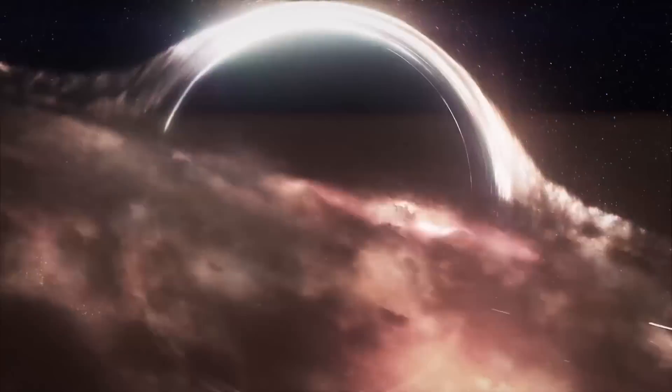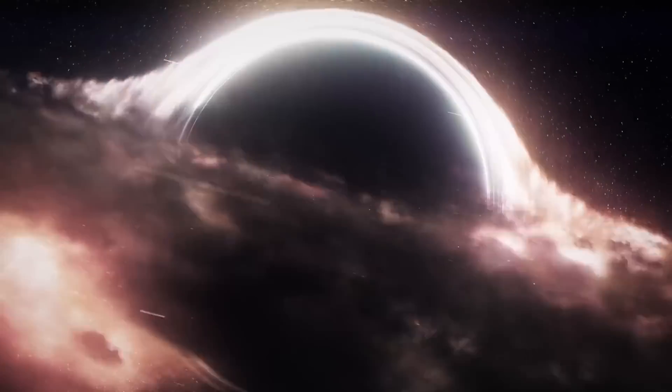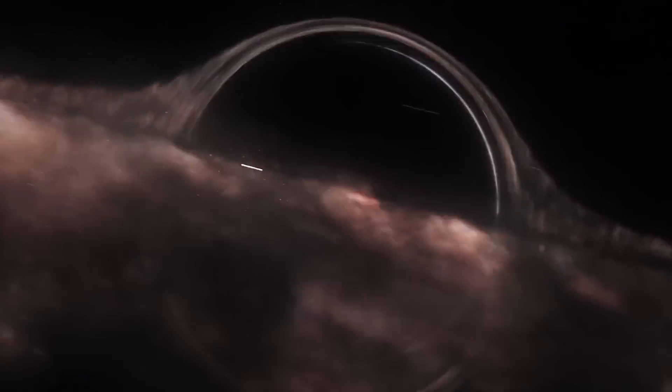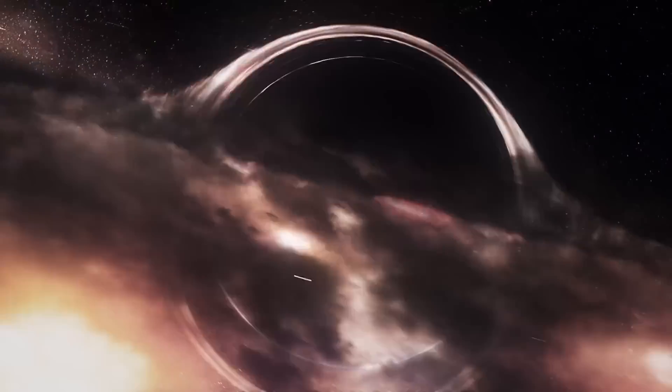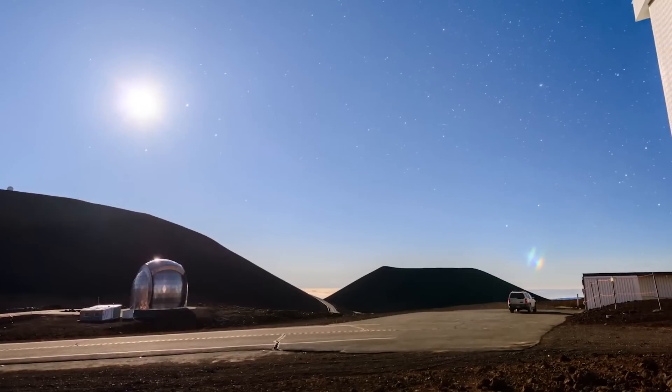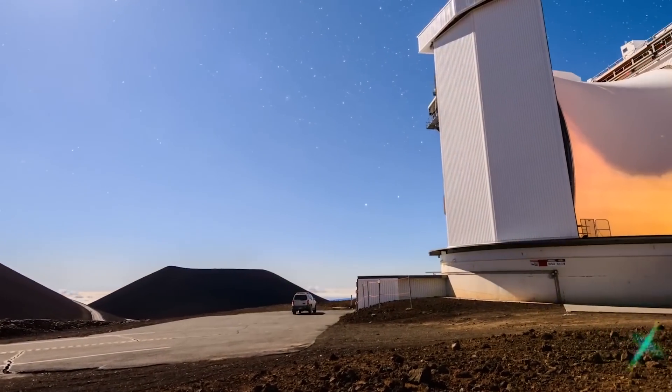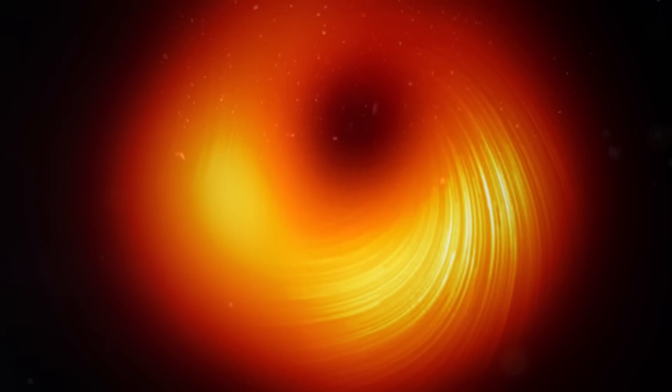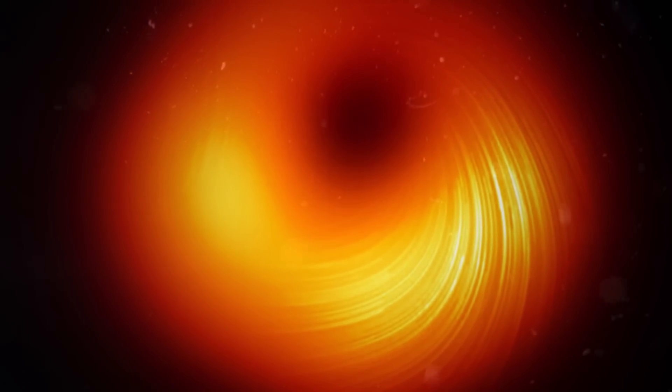Because the black hole is around 27,000 light-years from Earth, it appears in the sky to be about the same size as a doughnut on the Moon. The accomplishment follows the 2019 publication by the EHT team of the first image of a black hole at the heart of the Messier 87 galaxy.